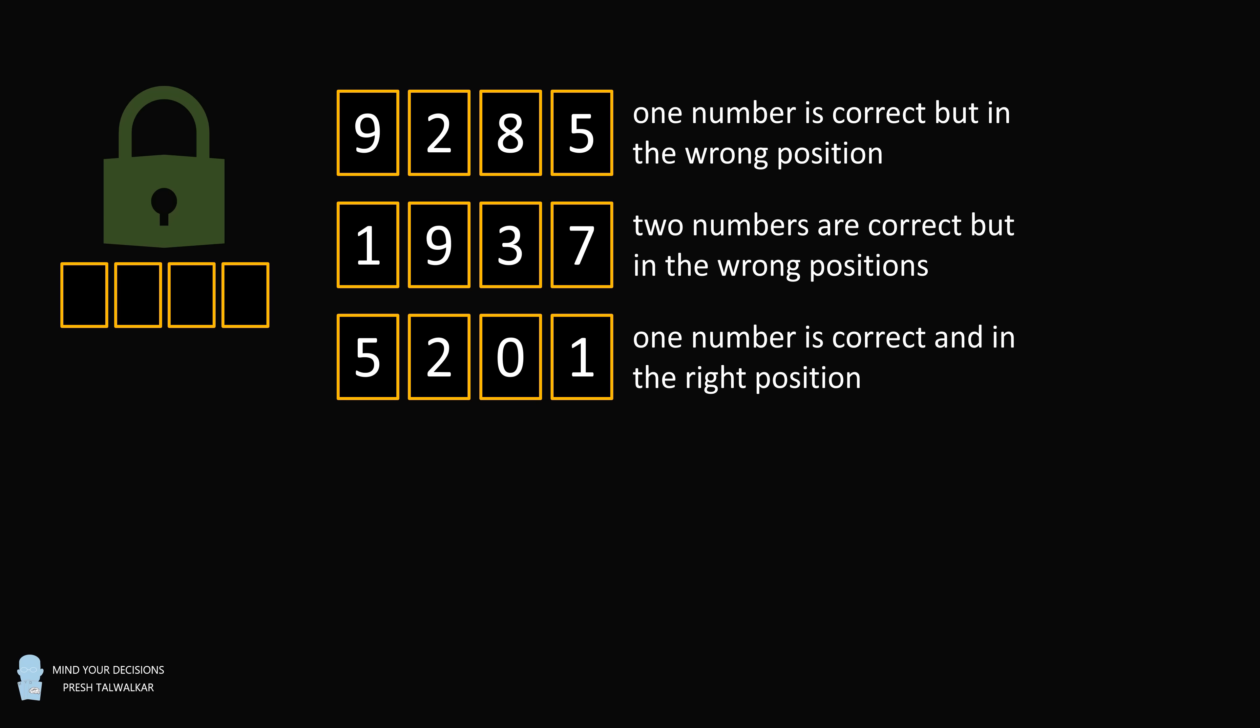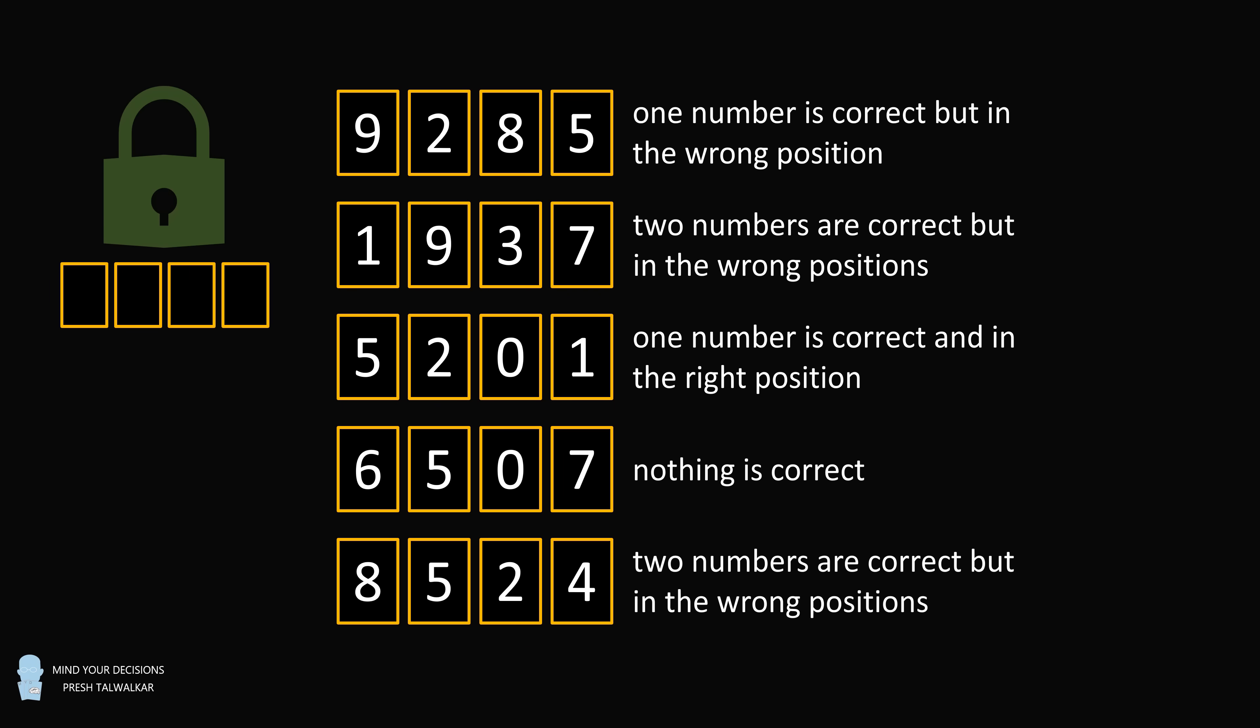5201. One number is correct, and in the right position. 6507. Nothing is correct. 8524. Two numbers are correct, but in the wrong positions. Can you figure out the four-digit code?